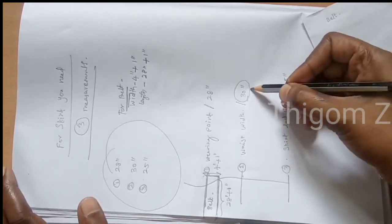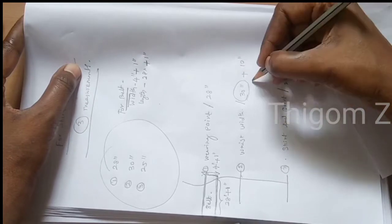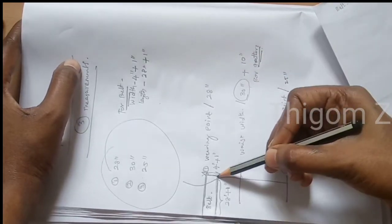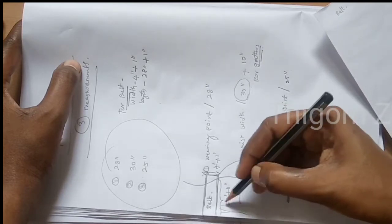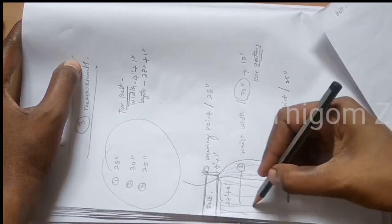Now the waist part - so I mark 30 inches and 10 inches for gathers. You can add more than that, it depends upon your desire.